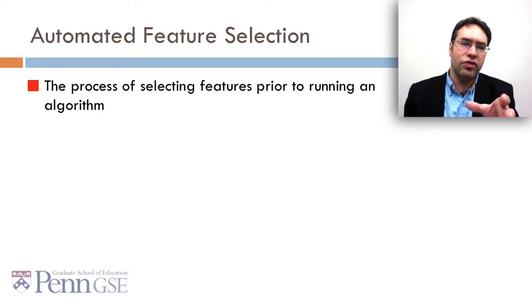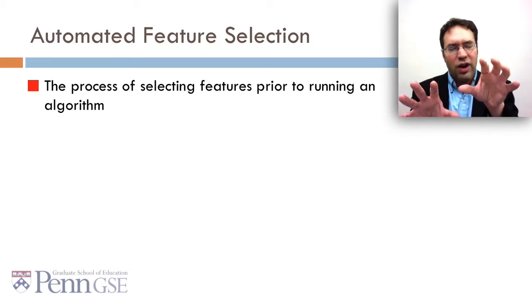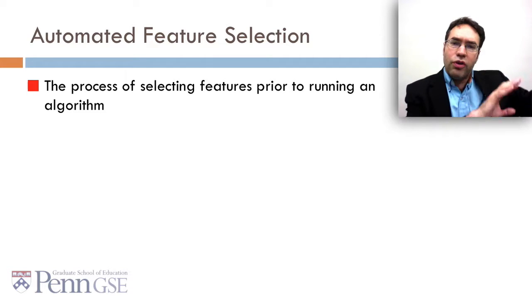Now let's move to talking about automated feature selection. Automated feature selection is the process of selecting features prior to running an algorithm, so rather than selecting features within your algorithm, first selecting the features before you even get to them.